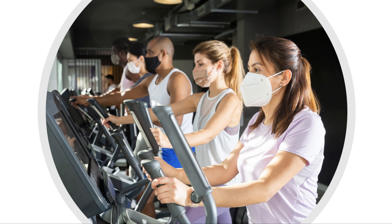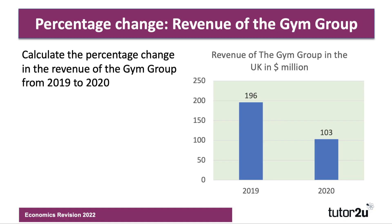Our third example relates to the gym industry and the Gym Group in particular, one of the UK's leading gym providers. This simple chart shows the total revenue — not profit — of the Gym Group in the UK, measured in dollars in 2019 and 2020. We can see the impact of the first COVID-19 lockdown in 2020 on revenues. Calculate the percentage change in revenue from 2019 to 2020 — press pause and have a go.